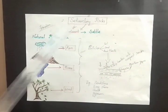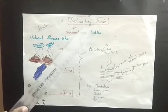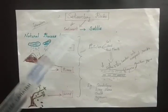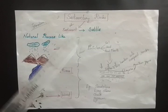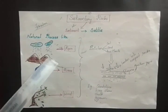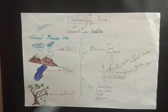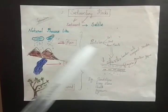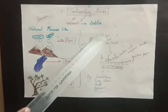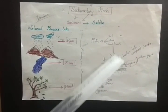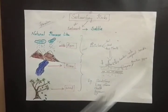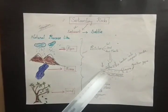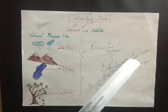Sedimentary rocks are formed due to natural agents like rain, rivers, and wind. These natural agents carry dust particles of soil, sand, and dead plants, and deposit them layer by layer. After millions of years, these deposits harden into compact rocks, which are called sedimentary rocks.